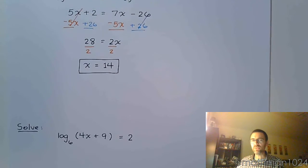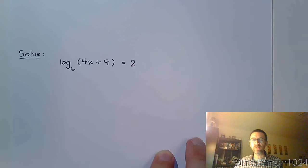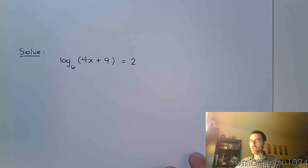Let's take a look at the next guy, something we've seen before. Log base 6 of 4x plus 9 equals 2. So whenever you have variables inside of logarithms, for the most part, you end up flying the plane, right?